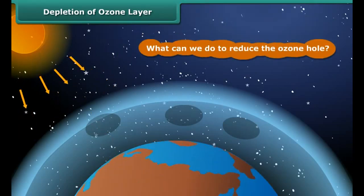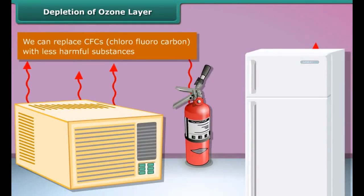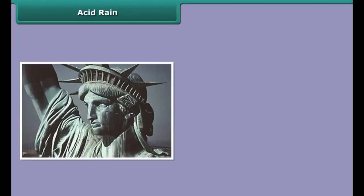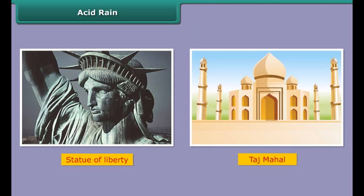What can we do to reduce the ozone hole? We can replace CFCs with less harmful substances to save the ozone layer from depletion. Here is a simple interactivity for you. These are the images of the Statue of Liberty in New York and the Taj Mahal in Agra — they are badly damaged due to acid rain.